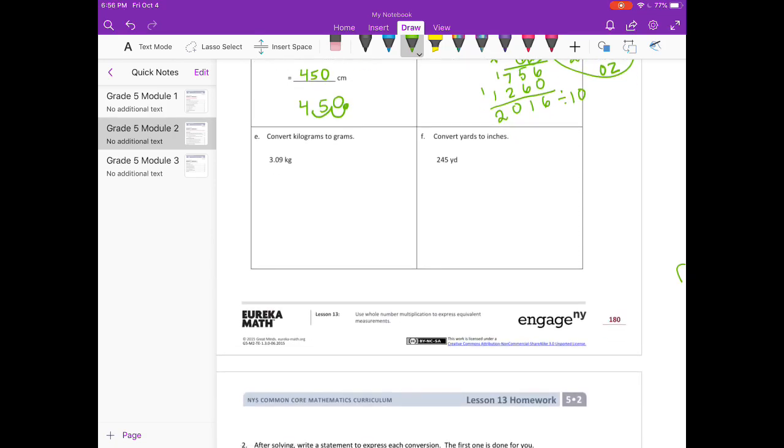Convert kilograms to grams. Well, there's 1,000 grams in one kilogram. So what I need to do is 3 and 9 tenths times 1,000. And that would be, if we shift the decimal point three places, 3,090 grams.